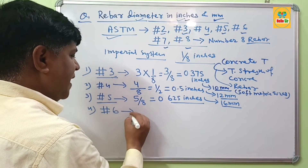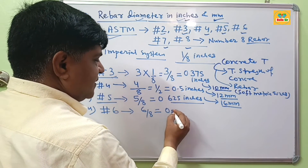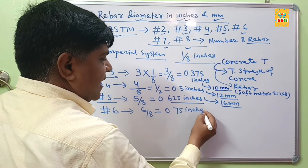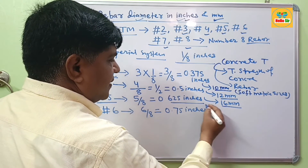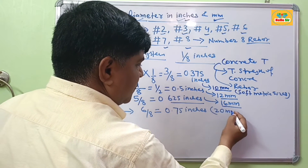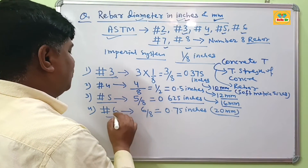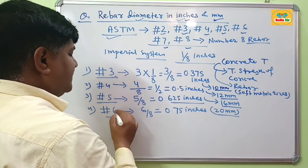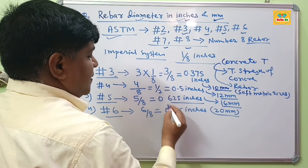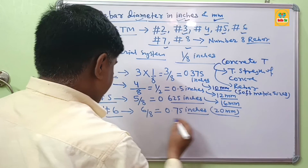If you want to calculate the diameter of number 6 rebar, this will be 6/8, which equals 0.75 inches. In millimeters, this equals about 20 mm. So the diameter of number 6 rebar is 0.75 inches or 20 mm.